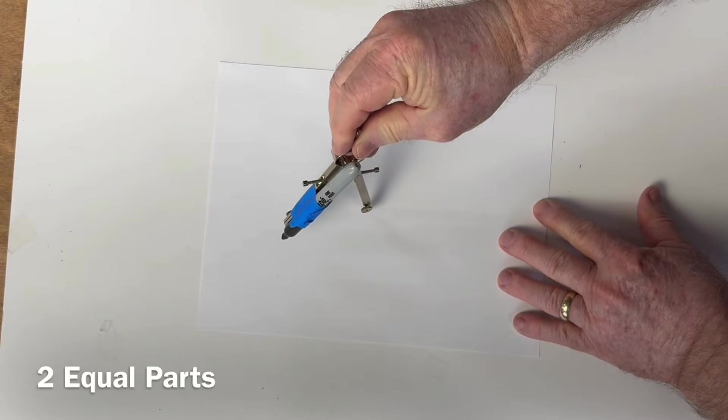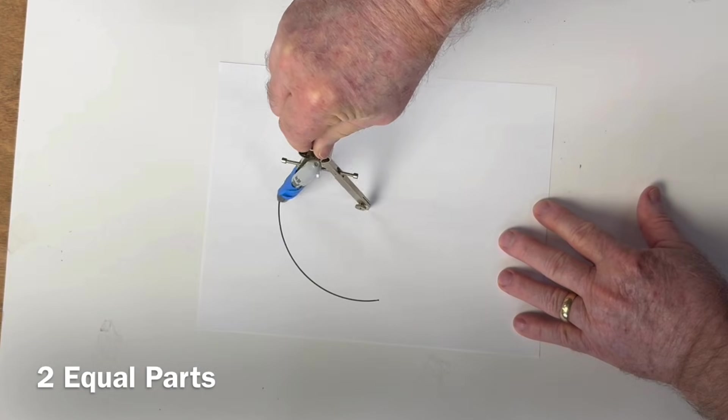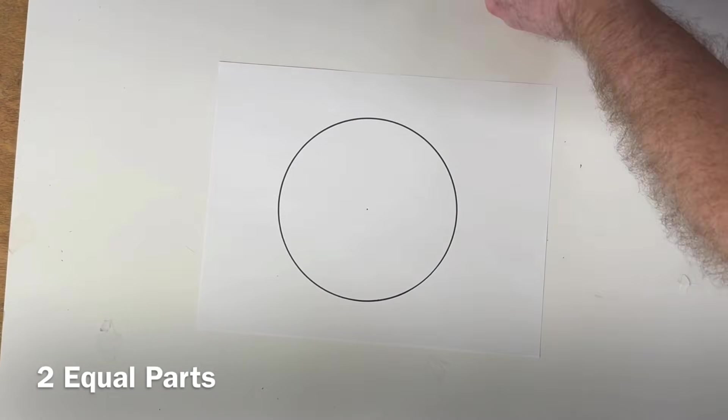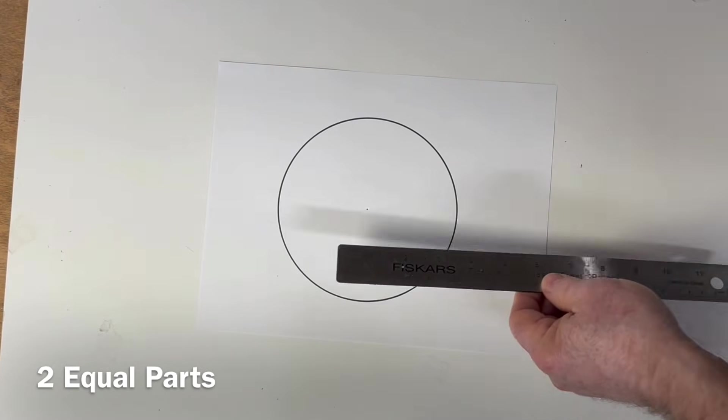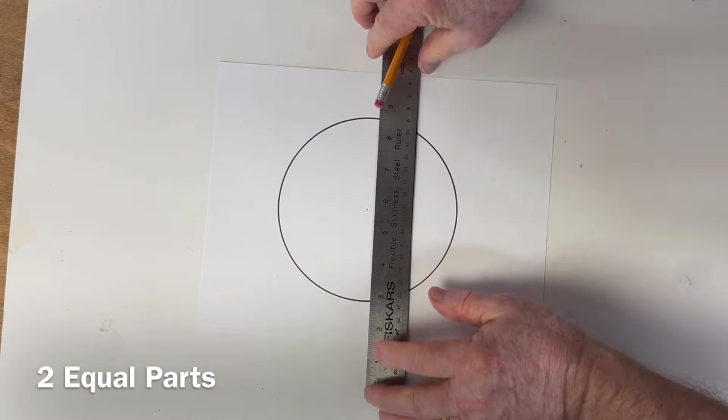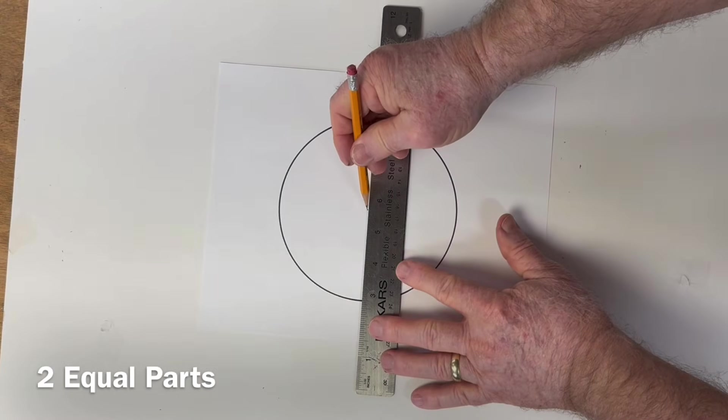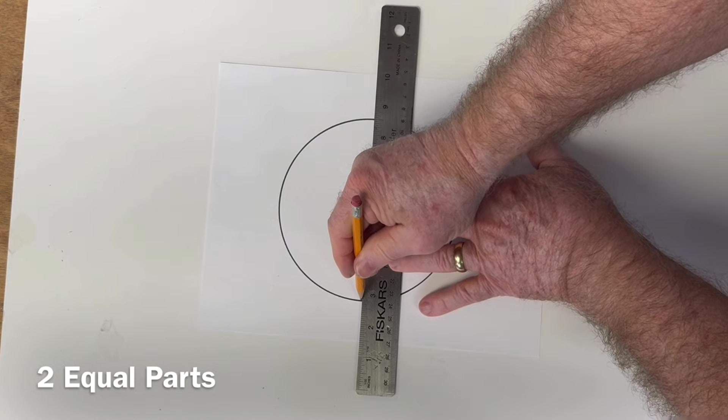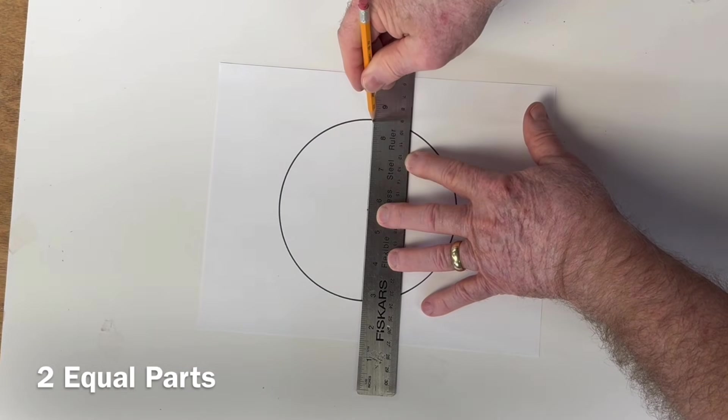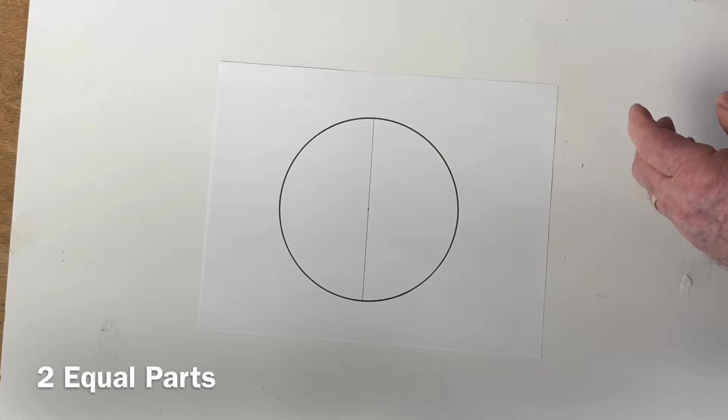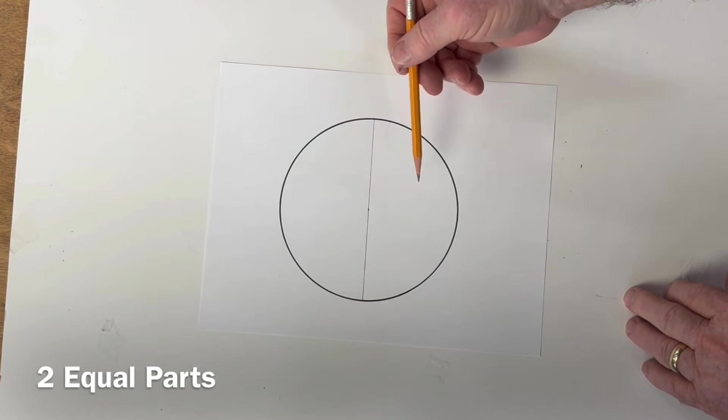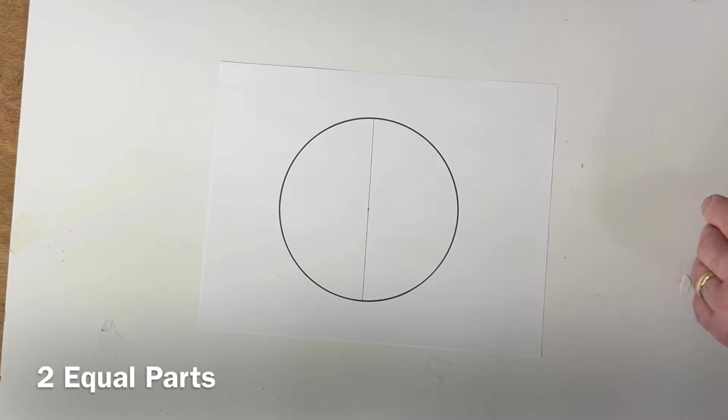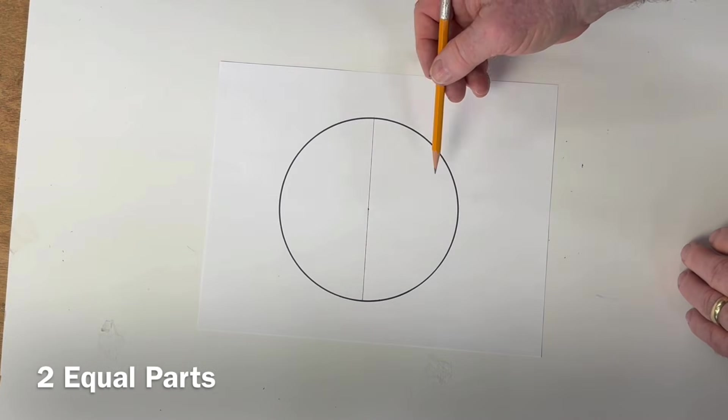All right, we're going to start out with a circle. And then I will draw this straight across, using that center point as my reference. And that will give me the diameter of the circle. And of course, that divides it equally into 2. Now because it rotates around this center point, anywhere that you draw that line, it's going to divide it into 2 equal parts.